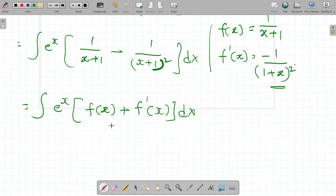So what is this formula? e power x integral of f of x plus f dash x dx is equal to e power x times f of x plus constant of integration.